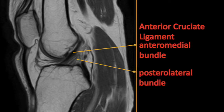Anterior cruciate ligament. It is attached to a fossa on the posteromedial aspect of the lateral femoral condyle. Distally, it is attached to a fossa anterior and lateral to the anterior tibial spine.